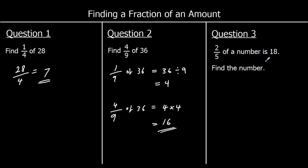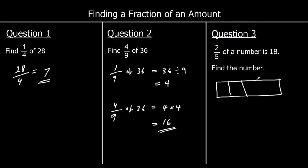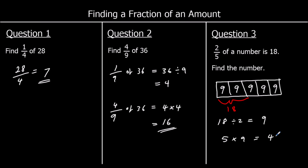Question three: two fifths of a number is 18 — find the number. So we've got a number split into five equal parts, and two of the bits are worth 18. If we do 18 divided by two, we find that each bit is worth nine. So in total we've got five nines, which is 45.